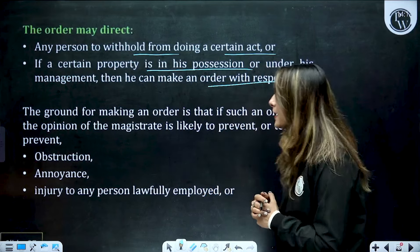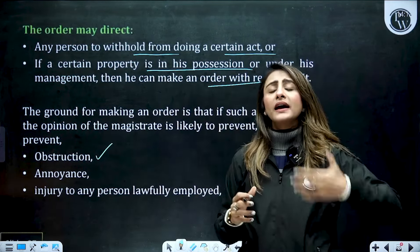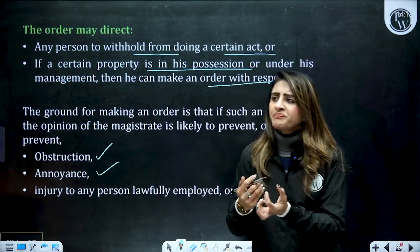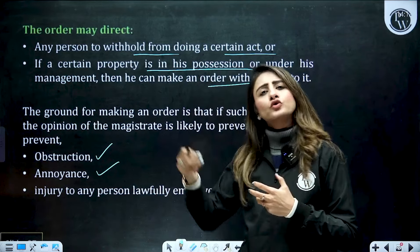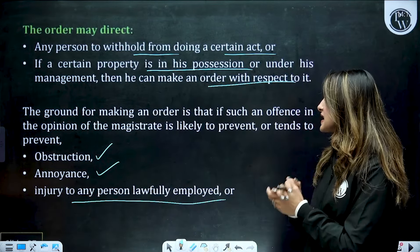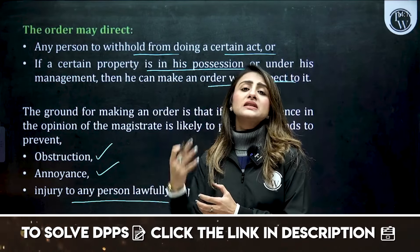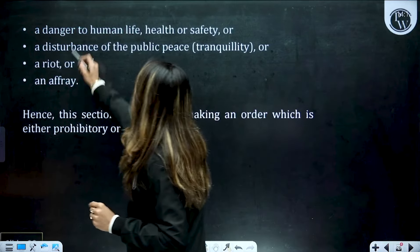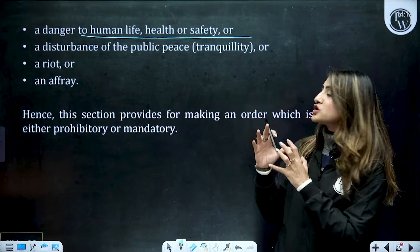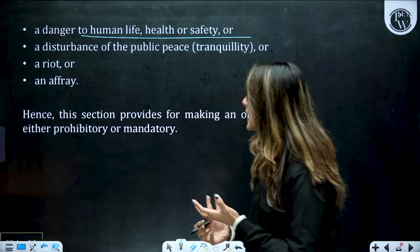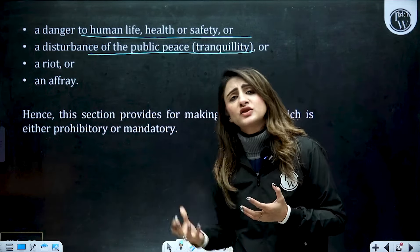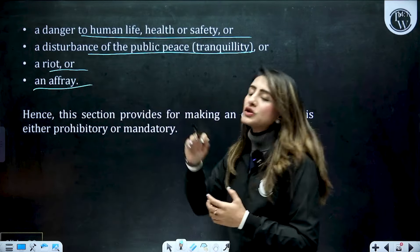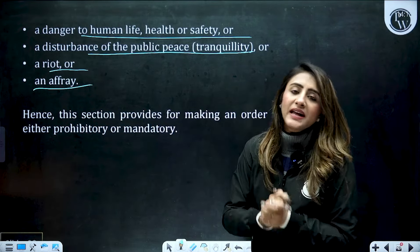Kya-kya grounds hote hain jiske behaf par section 144 ko issue kiya jata hai? Those grounds are — agar obstruction ko prevent karna hai, suppose lag raha hai ki rights mein obstruction hone wala hai, toh wahaan par 144 issue kiya jayega. Annoyance ko — agar lag raha hai ki log yahaan par public nuisance create kar sakte hain, log toh annoyance ko prevent karne ke liye kiya ja sakta hai. Agar magistrate ko yeh lagta hai ki kisi na kisi person ya property ko injury ho sakti hai, toh wahaan par bhi magistrate 144 ko apply kar sakti hai. If the magistrate will think ki agar 144 lagu nahi ki, toh kisi human life ko danger hai, kisi ki health ko danger hai, ya safety protocols pe kuch danger aa sakti hai. Agar magistrate ko lagta hai ki public peace tranquility disturb hone wali hai, toh wahaan par bhi 144 ko issue kar sakti hai — dangal-fasad ya ladaiyan, is tariqe ki cheezoon ko prevent karne ke liye — these are the certain grounds on which the executive magistrate can issue section 144.